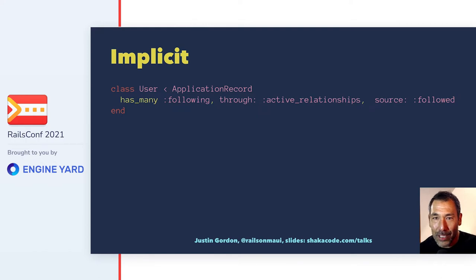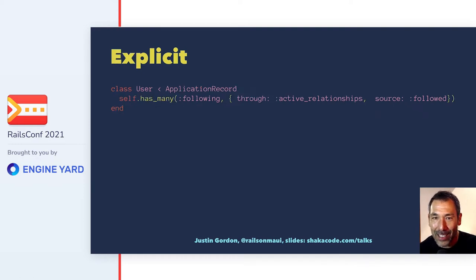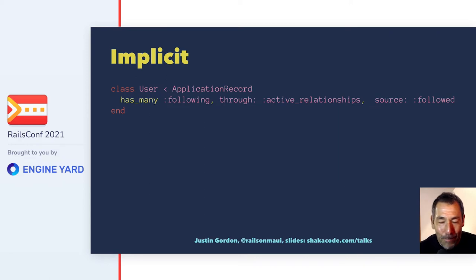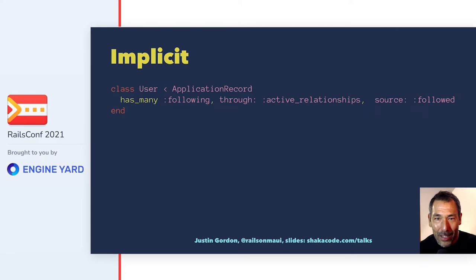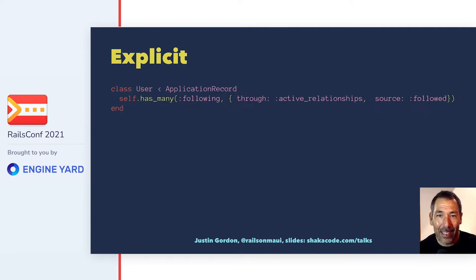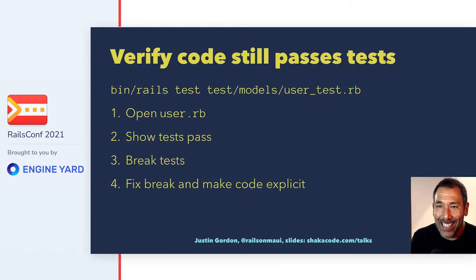Let's go back and forth between implicit and explicit. You see this implicit `has_many` on the User model — and explicitly it becomes `self.has_many`. You've got the friends, you've got the braces, you can see exactly what's going on. A beginning Rails programmer looks at the implicit version and it's just pretty much magical syntax. But it's really just a method on self, and what is self there? The self is the User class.